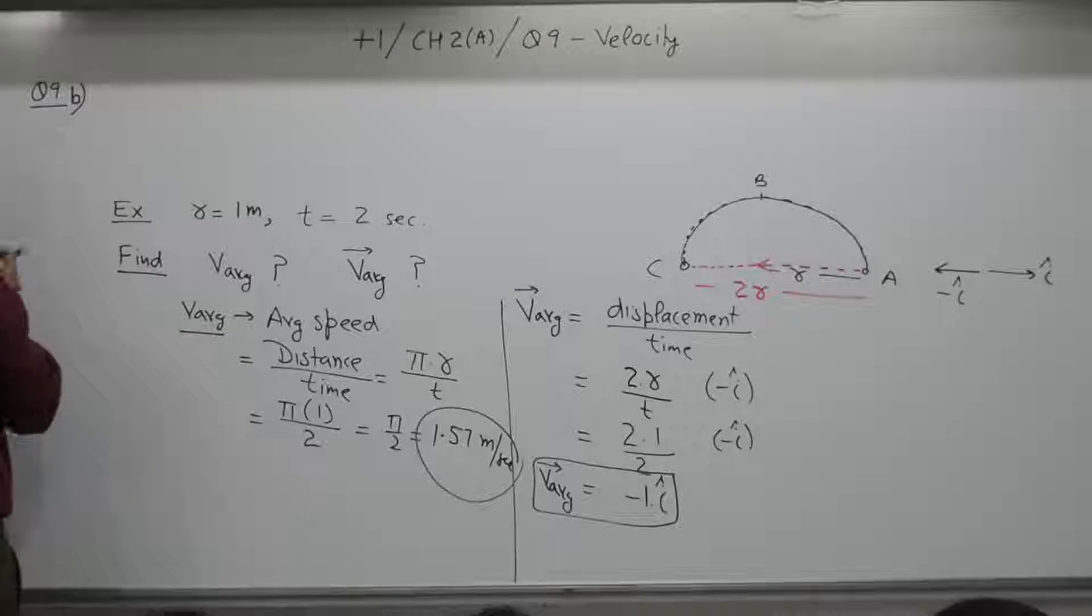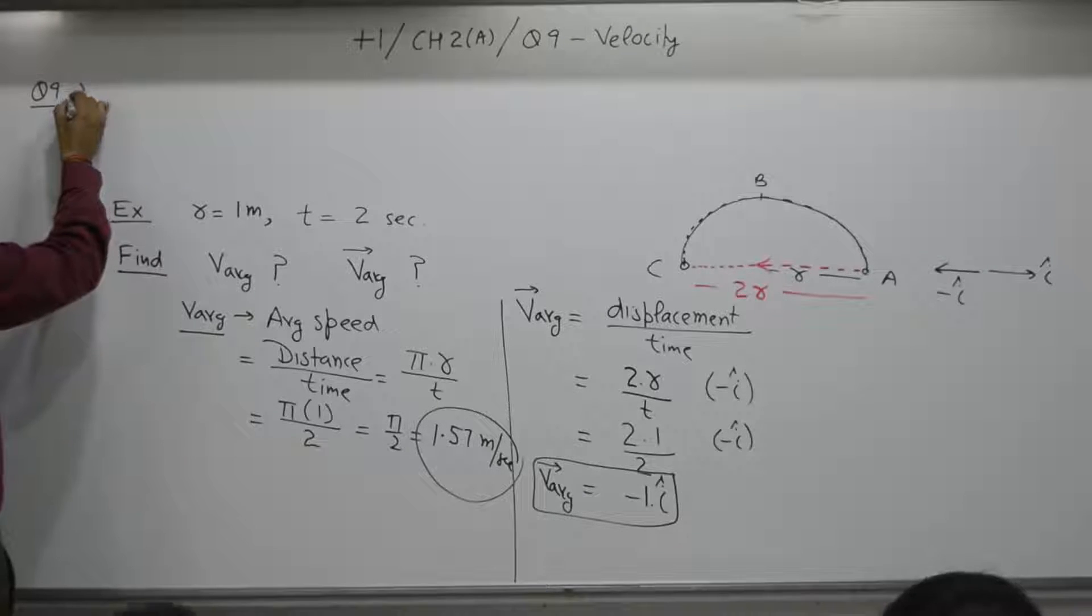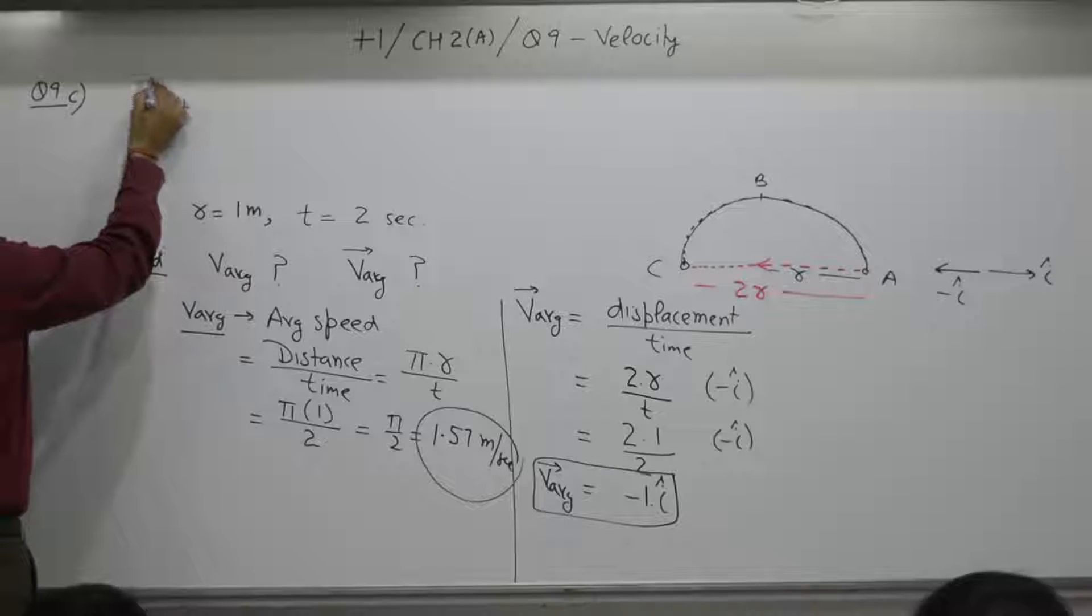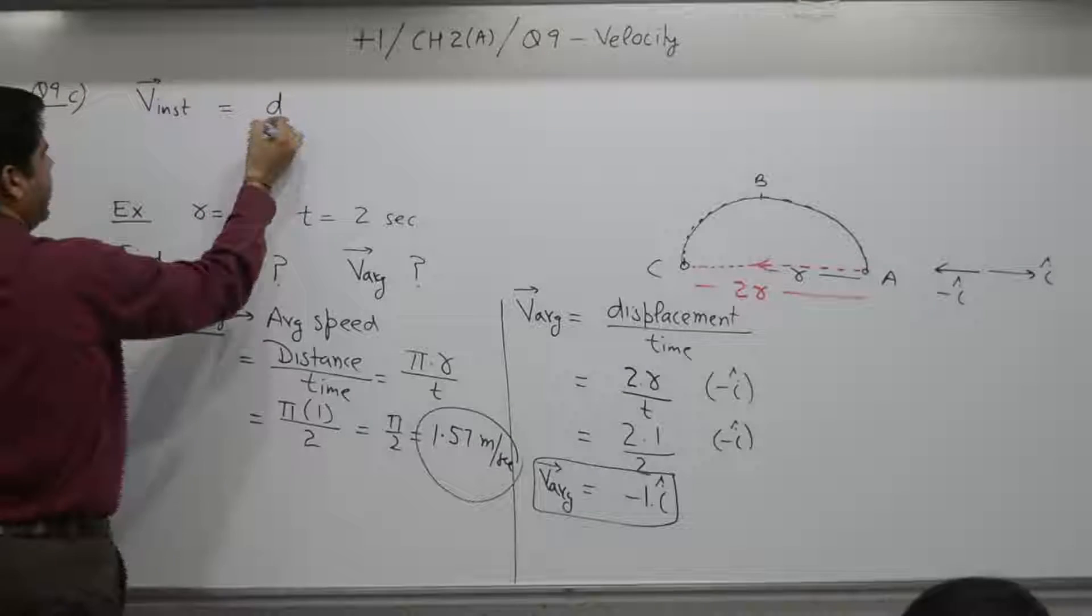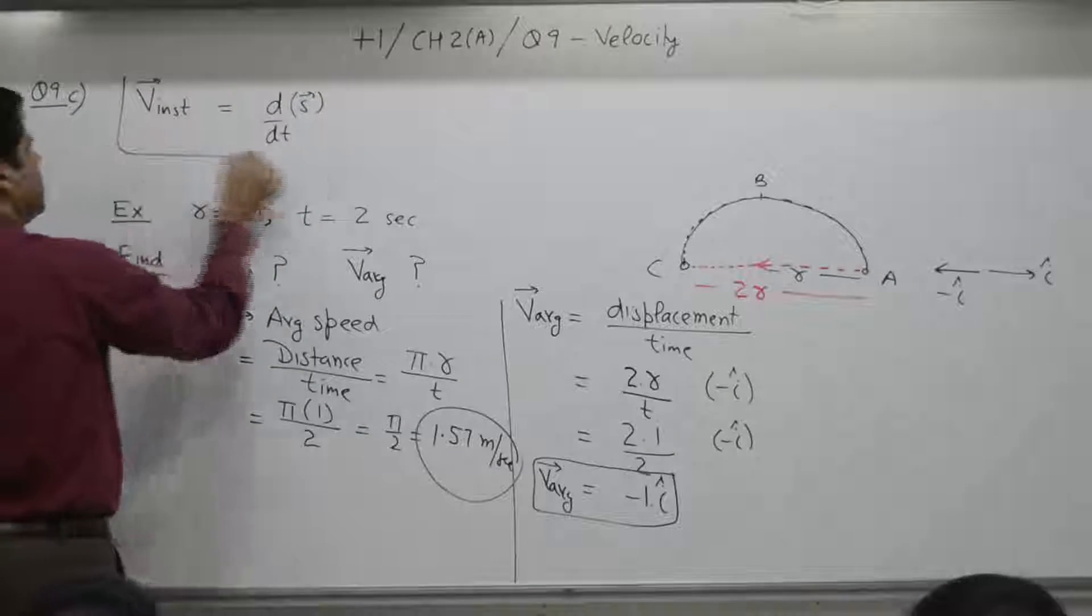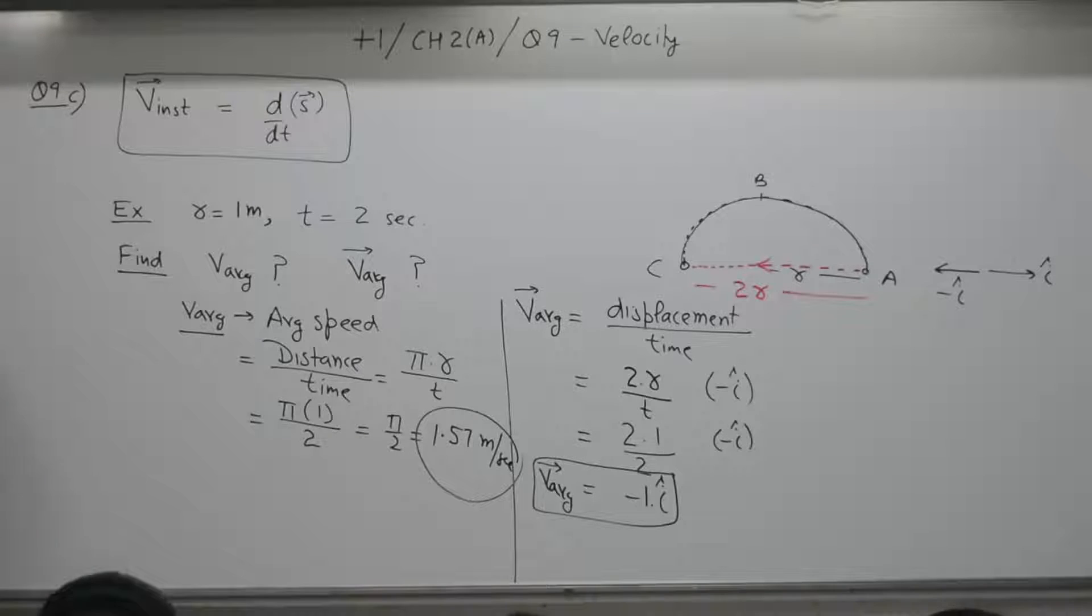And the C part you can say of the question. It is not there but it is written at the end. Instantaneous velocity is equal to rate of change of a displacement, that is all. Speed was rate of change of distance, it is rate of change of a displacement. 1 minute to complete. Thank you.